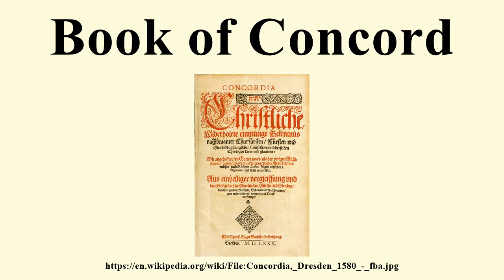The Book of Concord was compiled by a group of theologians led by Jacob Andrea and Martin Chemnitz at the behest of their rulers, who desired an end to the religious controversies in their territories that arose among Lutherans after the death of Martin Luther in 1546. It was intended to replace German territorial collections of doctrinal statements, known as Corpora Doctrinae, like the Corpus Doctrinae Philippicum or Misnicum. This aim is reflected by the compilers not calling it a Corpus Doctrinae, although it technically is one. The list of writings predating the Formula of Concord that would be included are listed and described in the Rule and Norm section of the Formula.